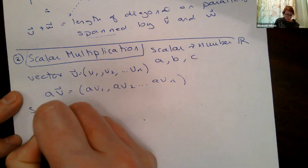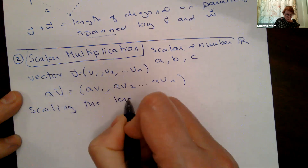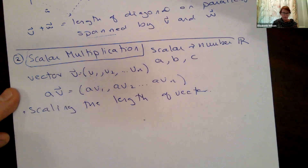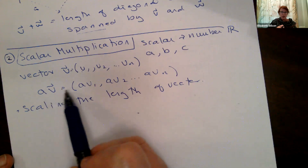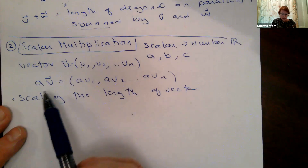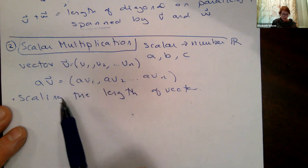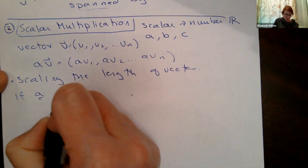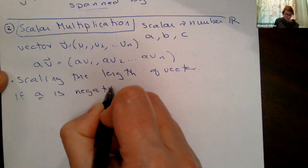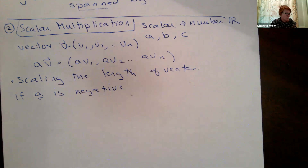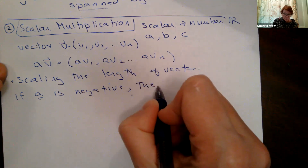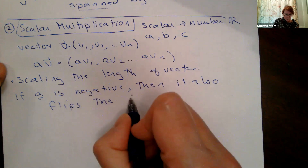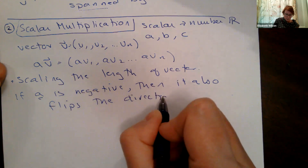This is basically scaling the length of the vector — I multiply every component by that scalar. If A is a negative number, like negative 1 or negative 5, then it also flips the direction of the vector. Multiplying by negative scalars flips the vector direction in addition to changing its length.